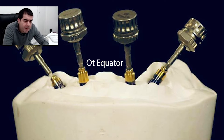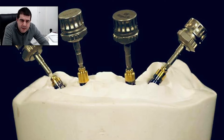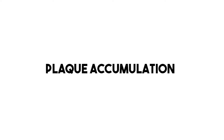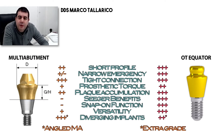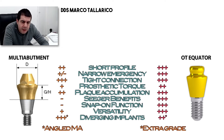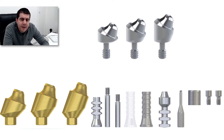This advantage also allows screwing and unscrewing the component multiple times with no risk of fractures. Regarding plaque accumulation, OT equator abutments feature TIN coating, allowing reduced plaque adhesion with lower susceptibility to bacterial attack. On the other side, multi-unit abutments may or may not be TIN coated, depending on the manufacturing company.